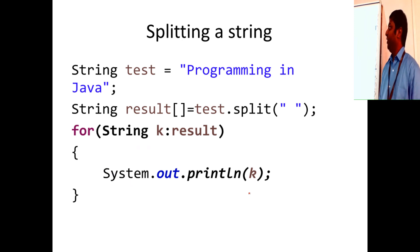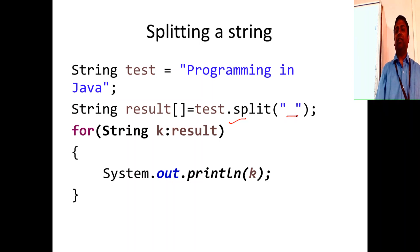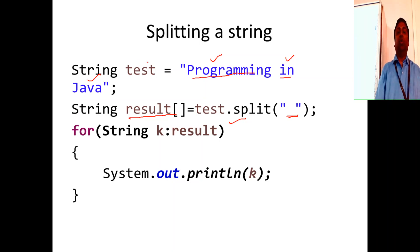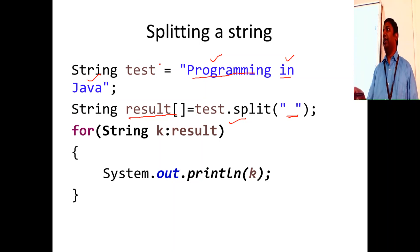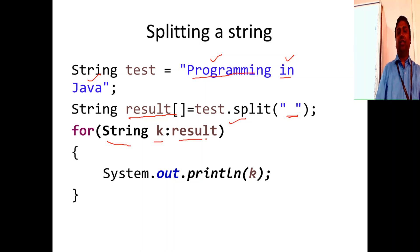Another interesting method is `split()`. You can use `.split()` with a delimiter. For example, splitting a sentence using a space delimiter returns an array of strings. "Programming" is at index 0, "in" at index 1, "java" at index 2. It returns an array of strings, not a character array. Print using an enhanced for loop: `for (String k : result)`, then print each word.